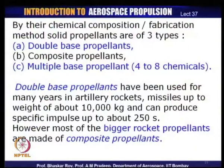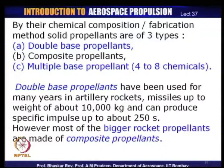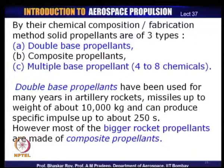By chemical composition and fabrication method, solid propellants are of three types: double base, composite, and multiple base — where four to eight different chemicals are mixed together. Double base propellants are the older type, used mainly for military missiles up to about 10,000 kg weight, producing specific impulse up to 250 seconds — considered good. Most modern rockets use composite propellants, which provide more control over the combustion and overall propulsion process.